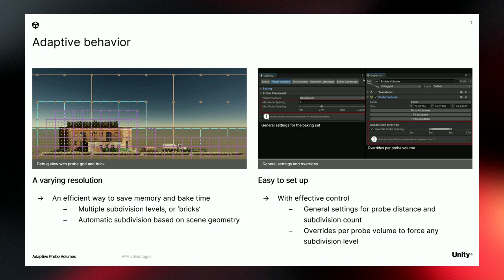The setup is automatic, but you can also get a lot of control. You have general settings for the minimum distance between probes, and you can choose the number of subdivision levels. You also have overrides per probe volume, so you can easily force one subdivision level for a specific area of your scene, giving you a lot of control over probe placement.